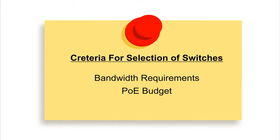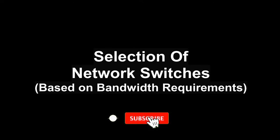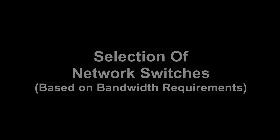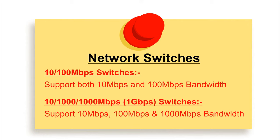Selection of switches depends broadly on two criteria: the bandwidth requirement of the network, and the PoE budget required. The two basic specifications for switches are 100 Mbps and 1 Gbps. Each port of a 100 Mbps switch supports up to 100 Mbps, and each port of a 1 Gbps switch supports up to 1 Gbps (1024 Mbps) of bandwidth.